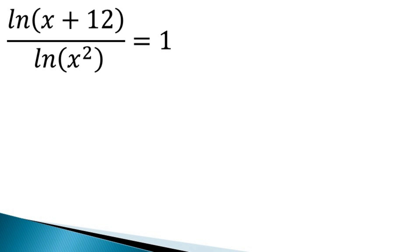And the equation becomes ln(x + 12) divided by ln x square is equal to 1. Cross multiplication gives ln(x + 12) is equal to ln x square.